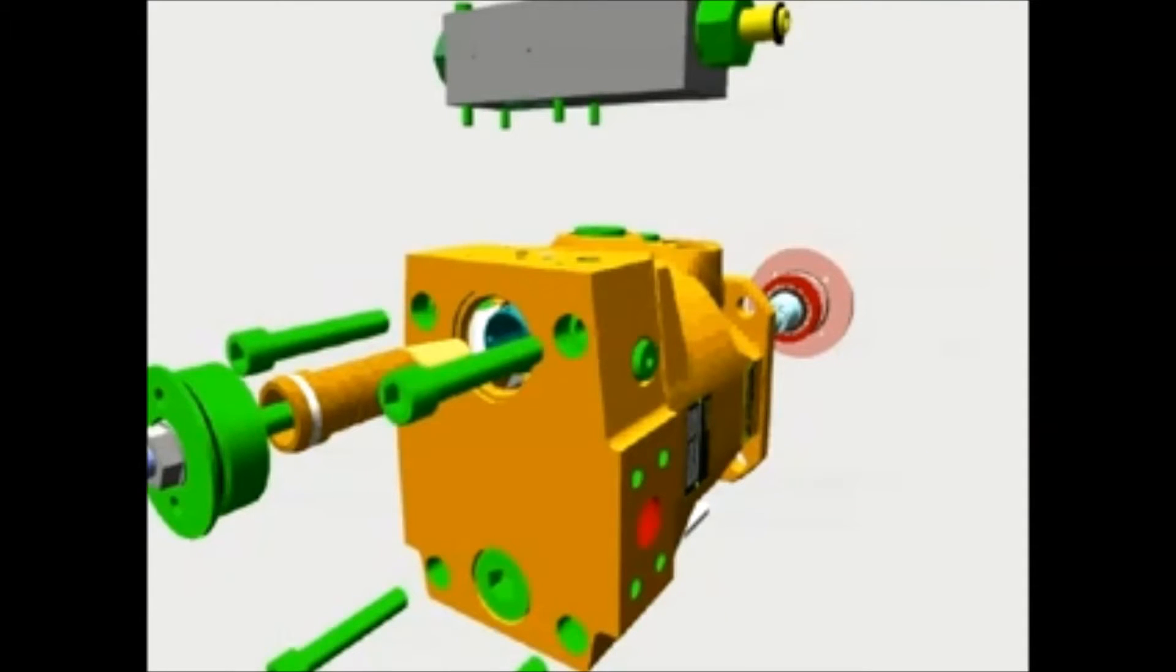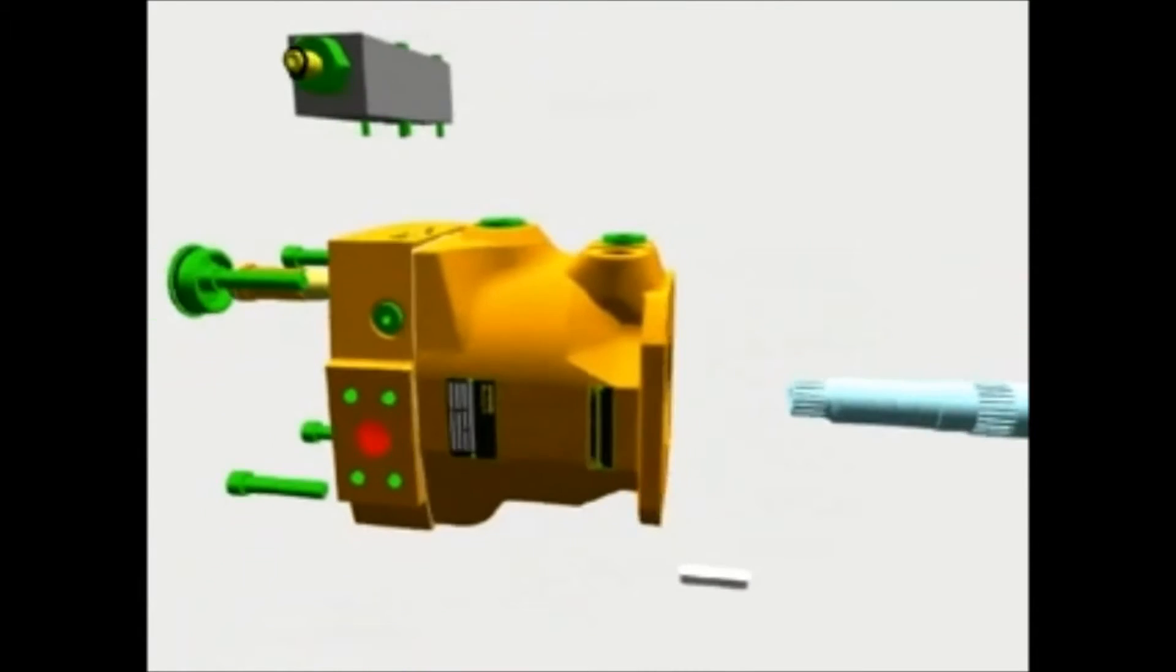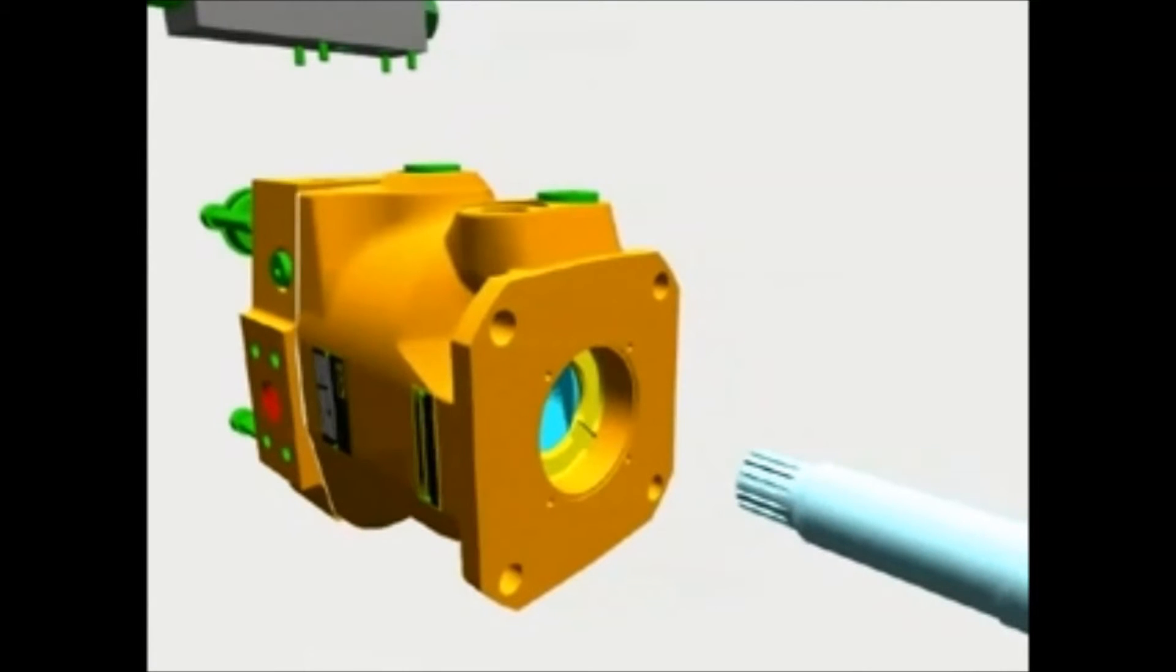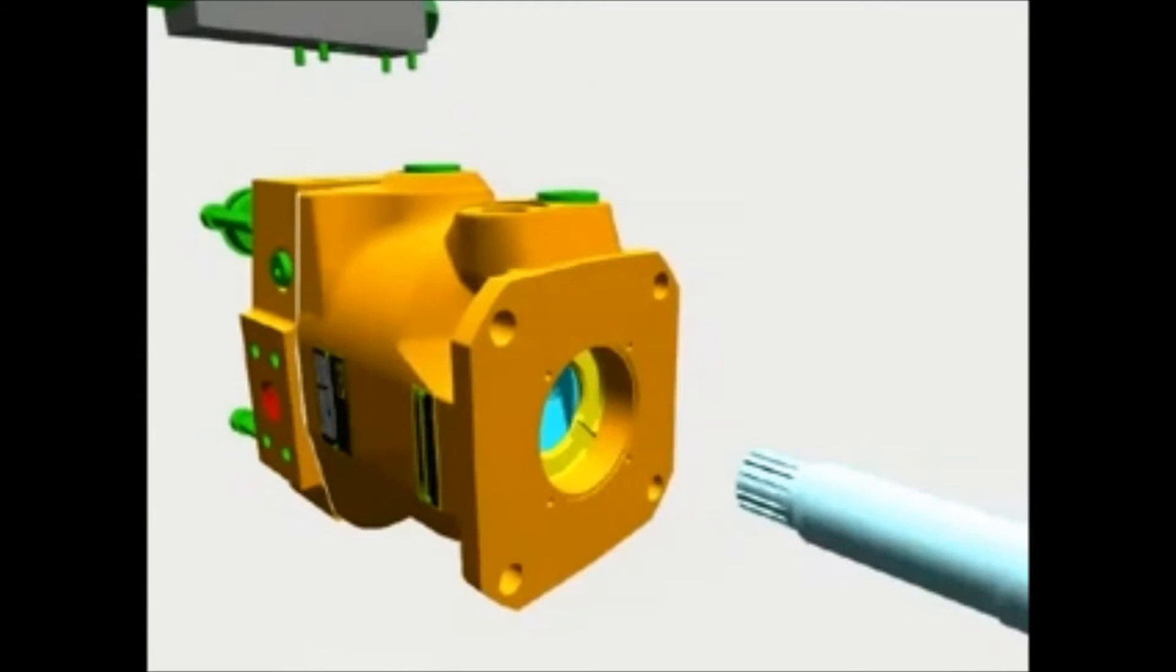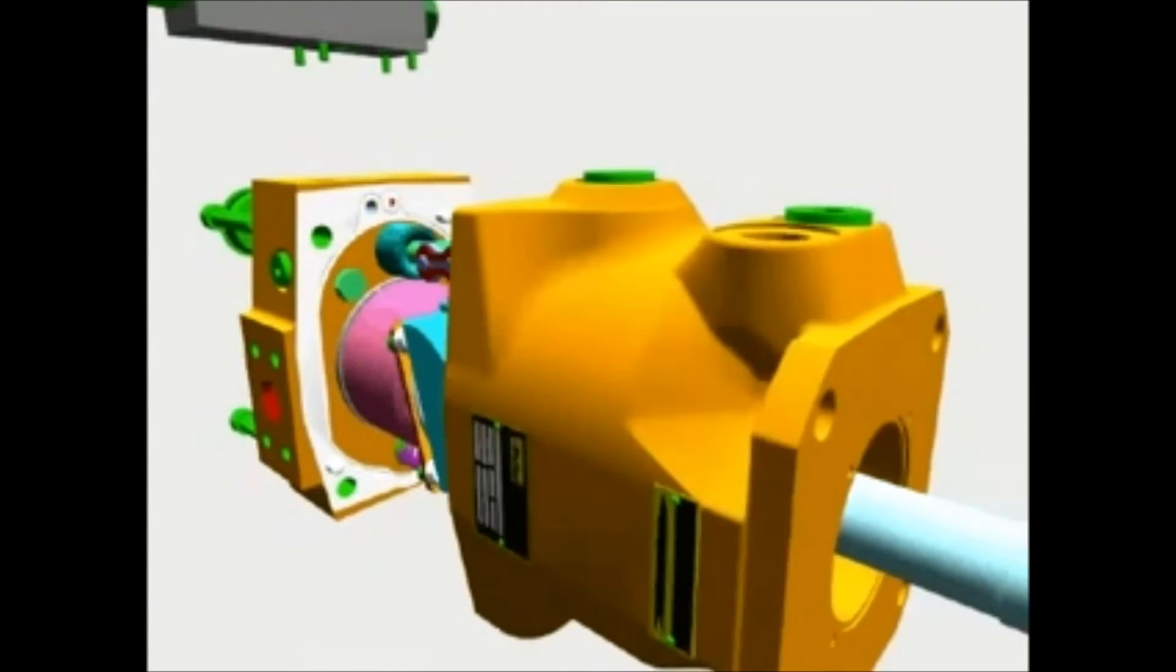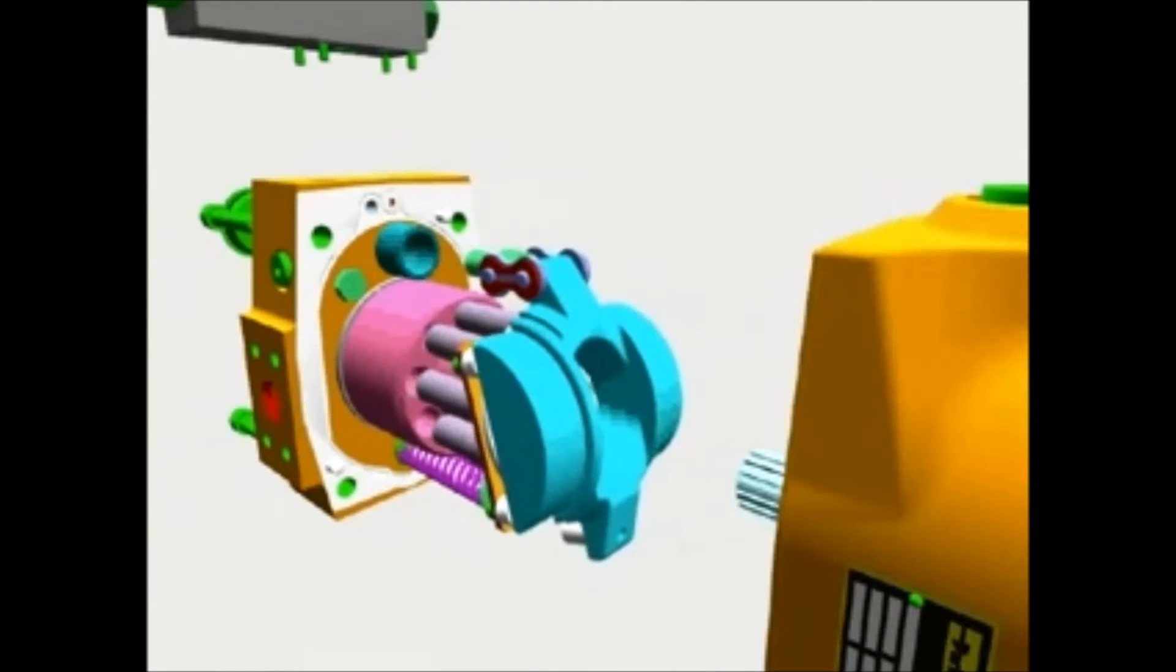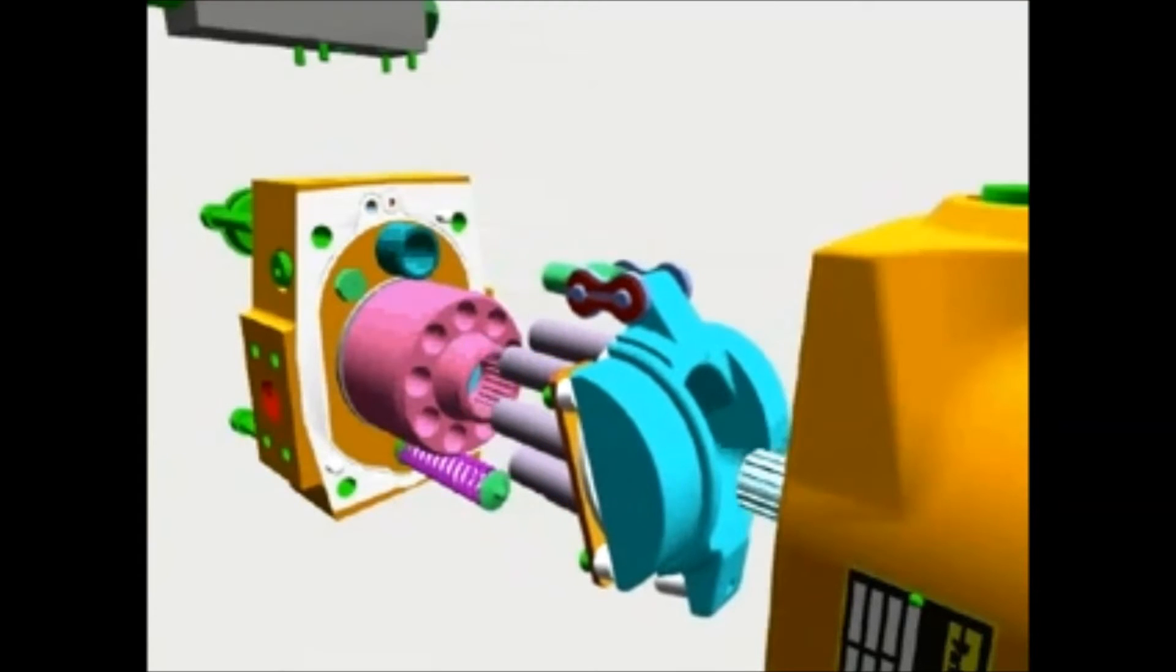After removing the four body screws, which are available in both metric or UNC sizes, we get to the heart of the pump. Removal of the pump case provides access to the rotating group, including the swash plate, the cylinder block, the pistons and slippers, and the valve plate.